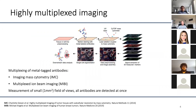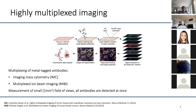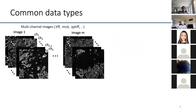The second approach is multiplexing via metal-tagged antibodies. I'm a postdoc in the Bodenmüller lab, which developed imaging mass cytometry. The other technique is multiplexed ion beam imaging. They both use metal-tagged antibodies with either laser ablation or ion beam ablation and a time-of-flight detector to detect heavy metal ions. These technologies produce multi-channel images where every grayscale channel stores the abundance of a certain protein, and by now we are also detecting RNA in tissues.